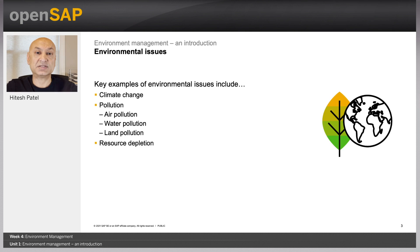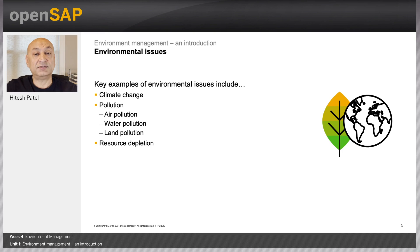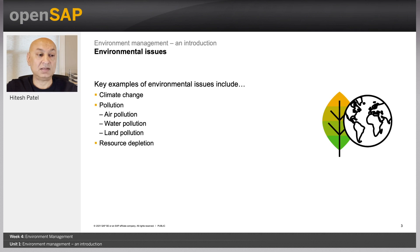Let's first understand some key environmental issues that we face. You must have heard of climate change, in other words, global warming. Greenhouse gas emissions are one of the key contributors to climate change. Combustion of fossil fuels is one of the key generators of greenhouse gas emissions. Introduction of contaminants into air, water, and land is another key environmental issue for air, water, and land pollution.